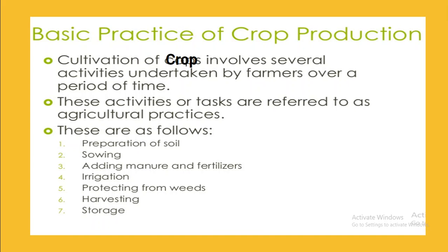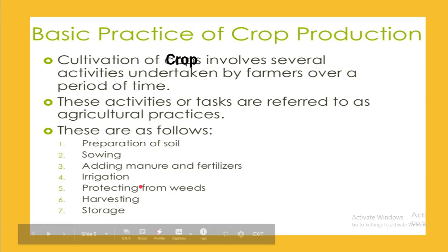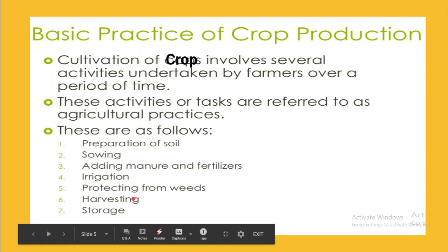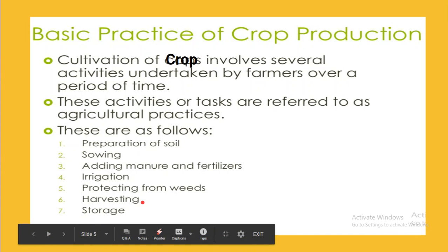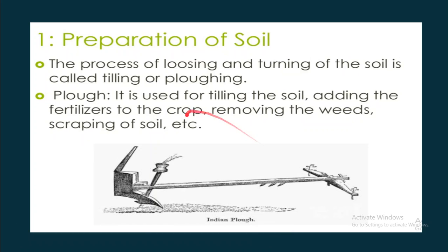Welcome back. In this session we discuss the basic practices of crop production. The cultivation of crops involves several activities undertaken by farmers over a period of time, referred to as agricultural practices. These are: preparation of soil, sowing, adding manure and fertilizers, irrigation, protecting from weeds, harvesting, and storage. These are the seven practices for best crop production.